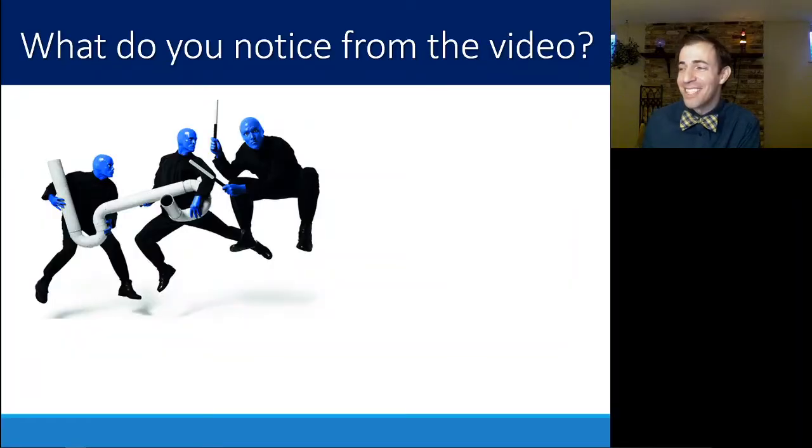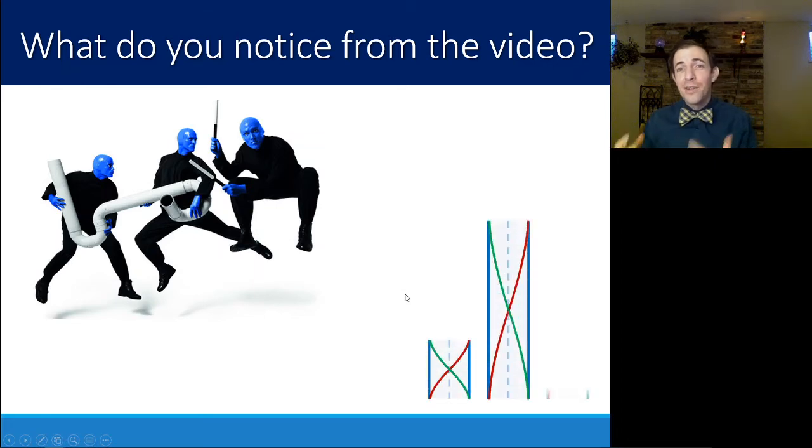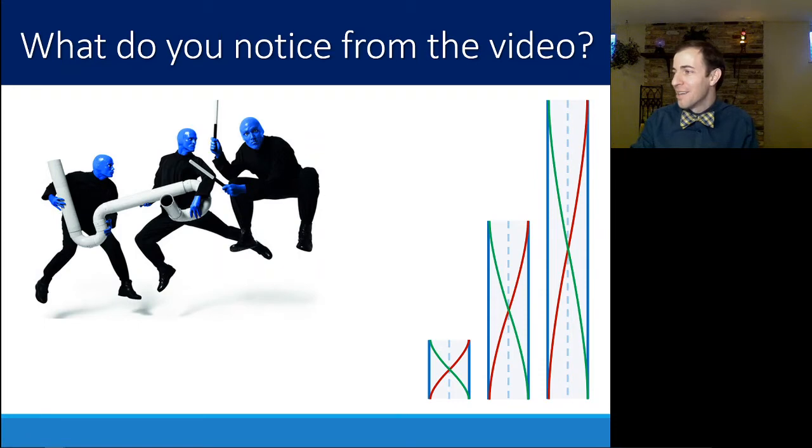It gets pretty intense there towards the end, but what you've probably noticed is the longer the tube was, the lower the note that it produced was. This is because the note being produced is something called a standing wave, which we'll talk about in a little bit. The longer the tube is, the longer the wavelength is going to be. A longer wavelength, as long as the sound is traveling at the same speed, results in a lower frequency. You experience fewer of those sound waves per second than you would a shorter wavelength. So the longer the instrument, the lower the note.